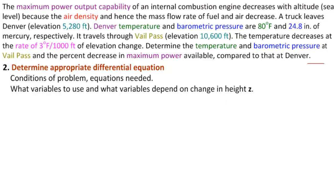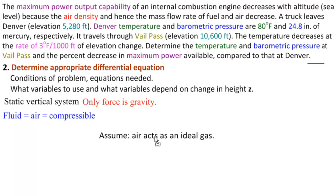Now, we have a static vertical system. We have two states, Denver and Vail, but in both places it's a static vertical system. So our only force is gravity. Our fluid is air. All this time we're talking about air, and it's compressible, and we're going to assume that the air acts as an ideal gas.